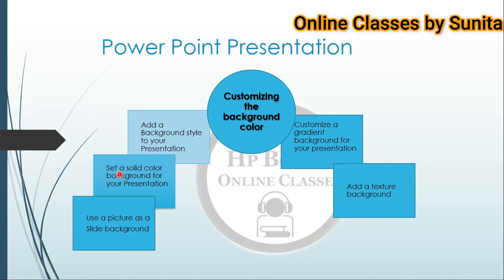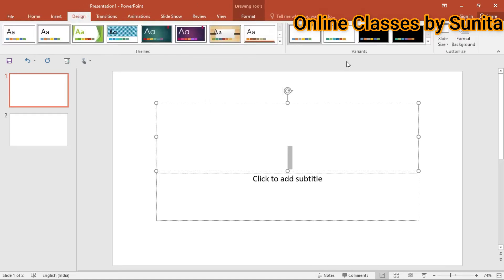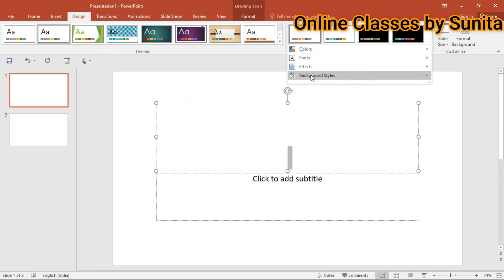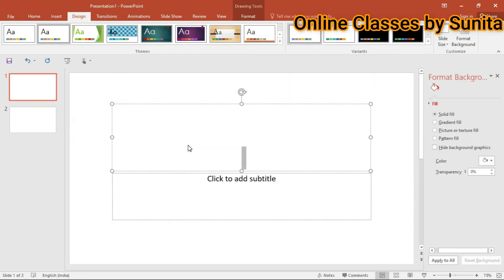The second step is to set a solid color background for your presentations. Go to the Design menu, then click on Background Styles. When you click on the Background Styles menu, you can choose Format Background.